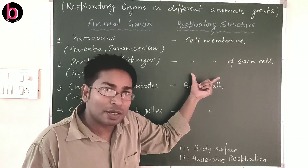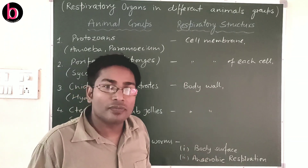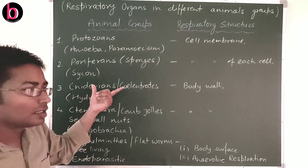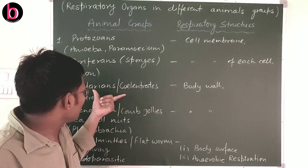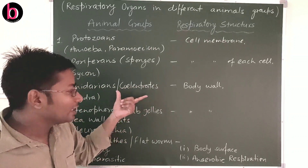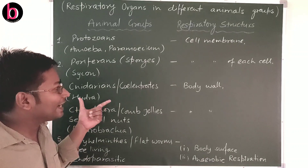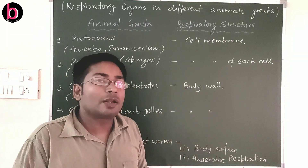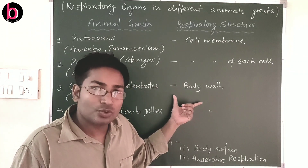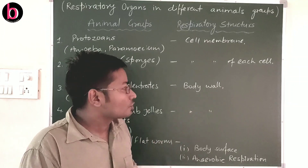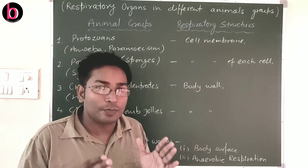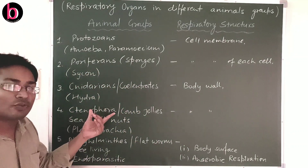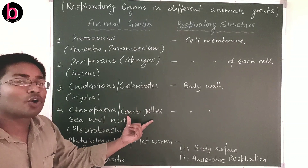The third phylum is Cnidaria, also known as Coelenterata because of the coelenteron cavity. The representative example is Hydra. They have tissue-level body organization where cells unite to form tissues, and they have a body wall. Respiration occurs through the body surface or body wall.